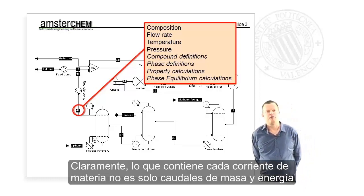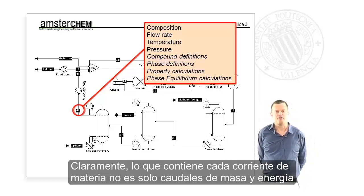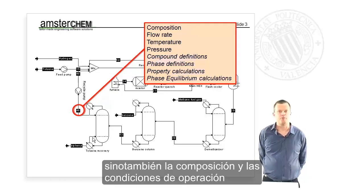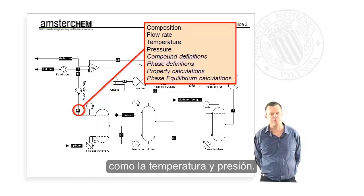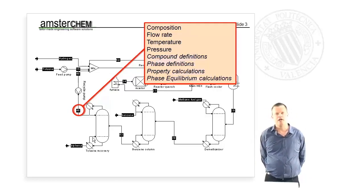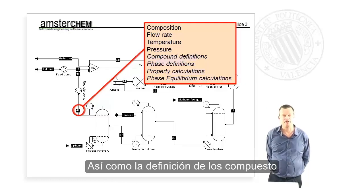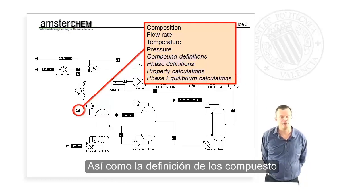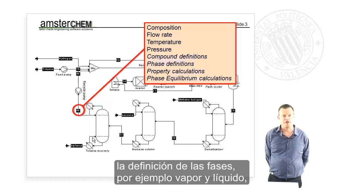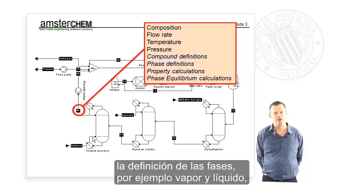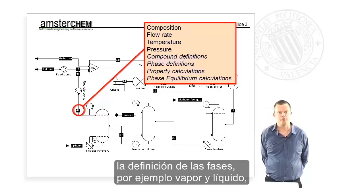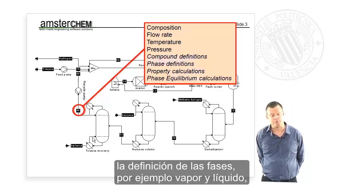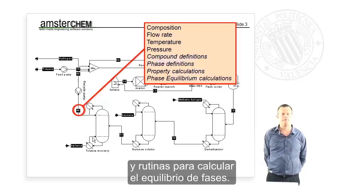What lives in a material stream is not only a mass and energy flow rate, but also a composition and operating conditions like temperature and pressure. Underlying that are compound definitions, phase definitions — for example vapor and liquid — and thermodynamic property routines to calculate properties of the phases and to calculate the phase equilibria.